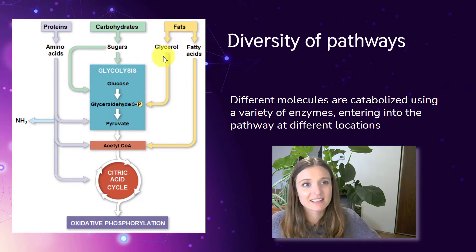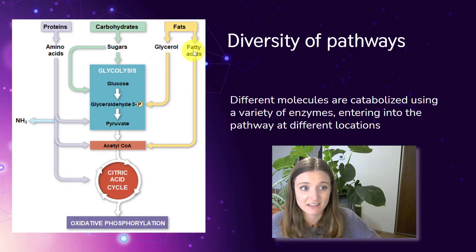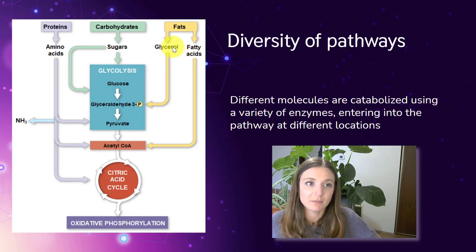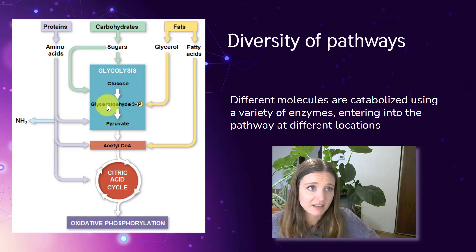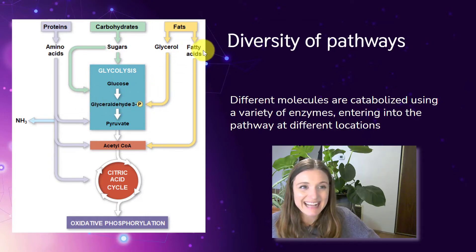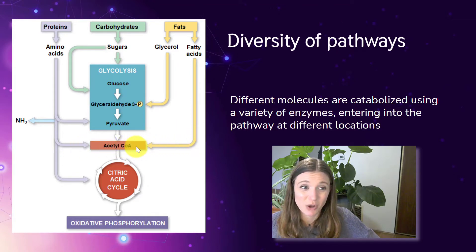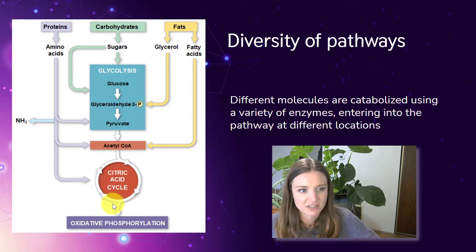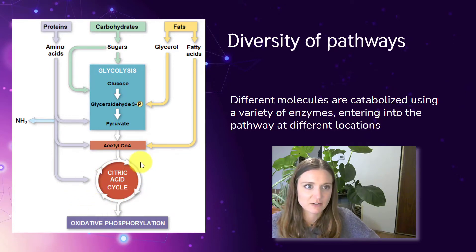Fats get broken apart into their glycerol and their fatty acid tails. Glycerol gets converted into glyceraldehyde and enters right here in glycolysis. The fatty acids get broken down and eventually end up as acetyl-CoA, acetyl-coenzyme A, which starts off the citric acid cycle.